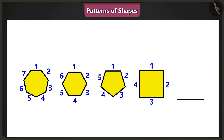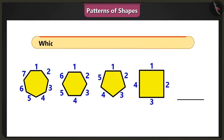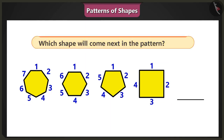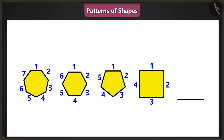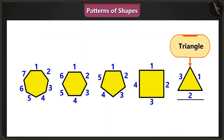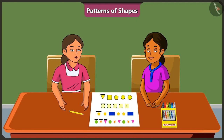So, now tell me, in this pattern, which shape will come next? In this pattern, the next shape will be the three-sided shape, triangle. Wow, Vinny. Well done. You have solved this riddle really well.